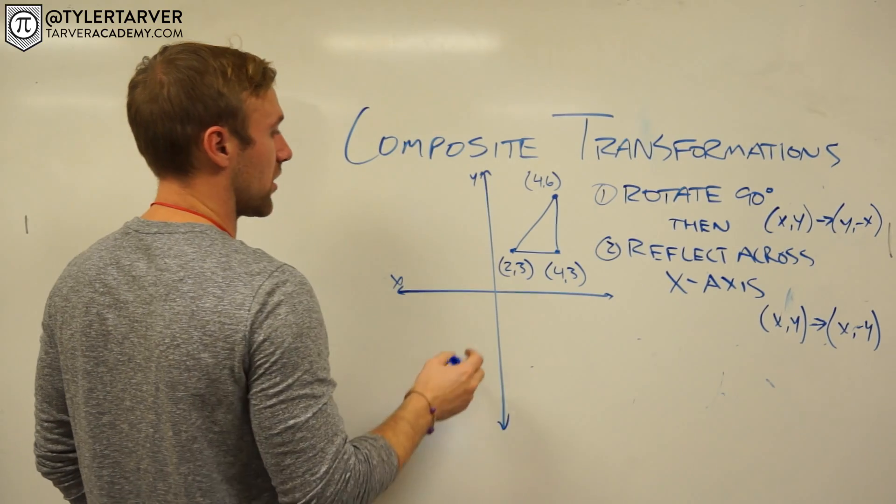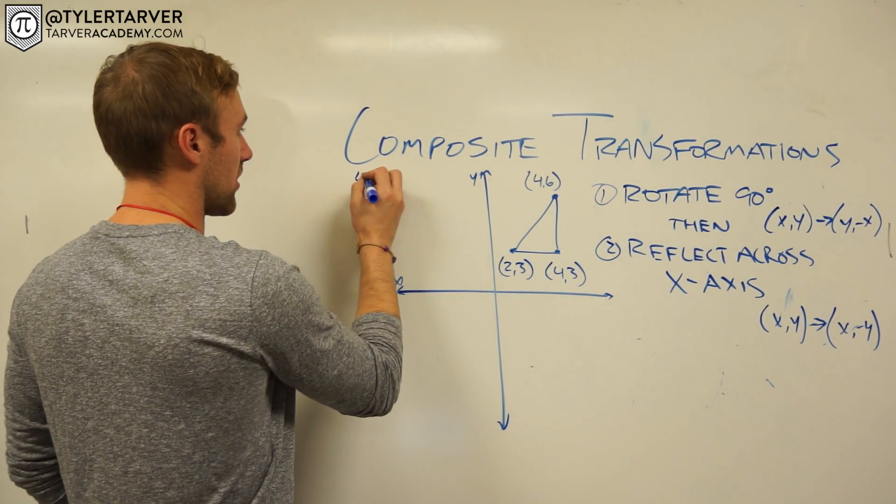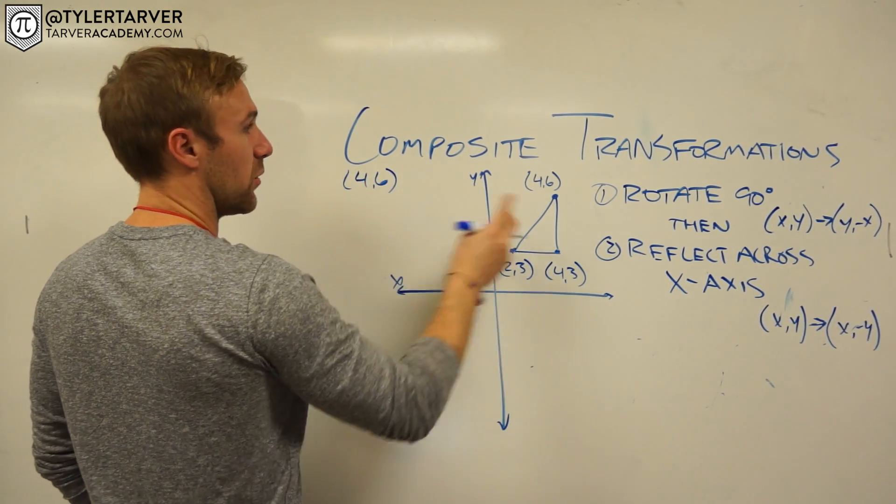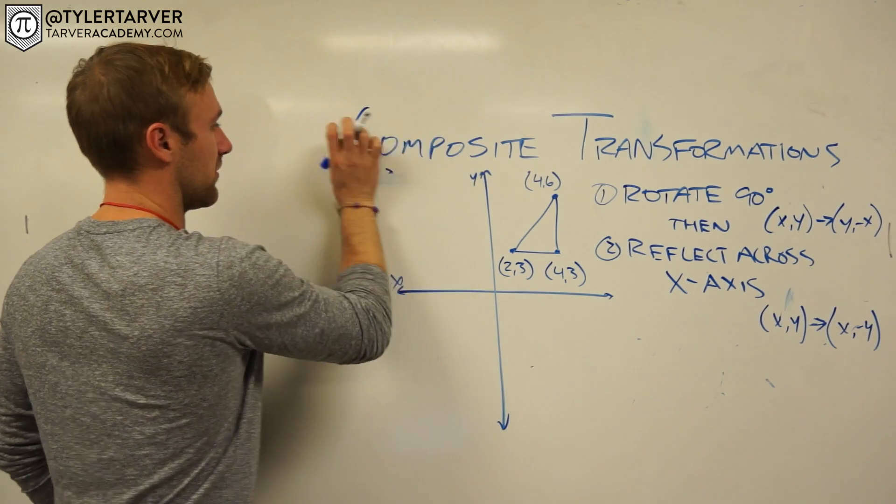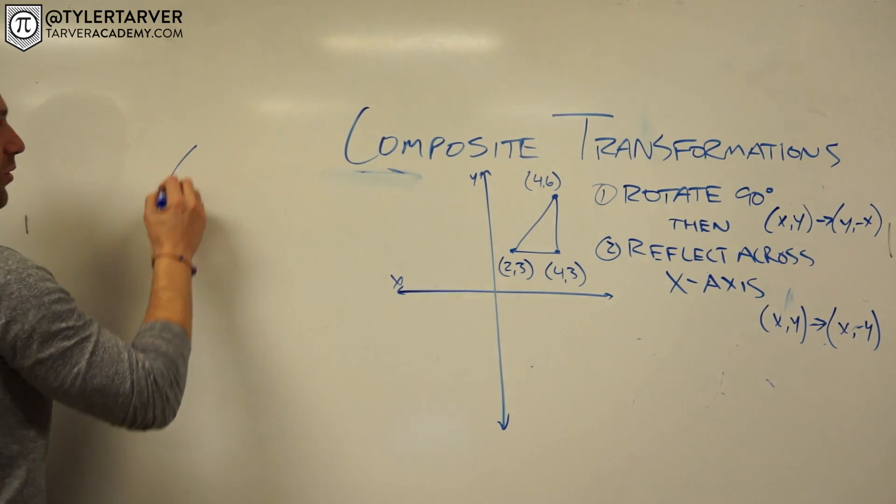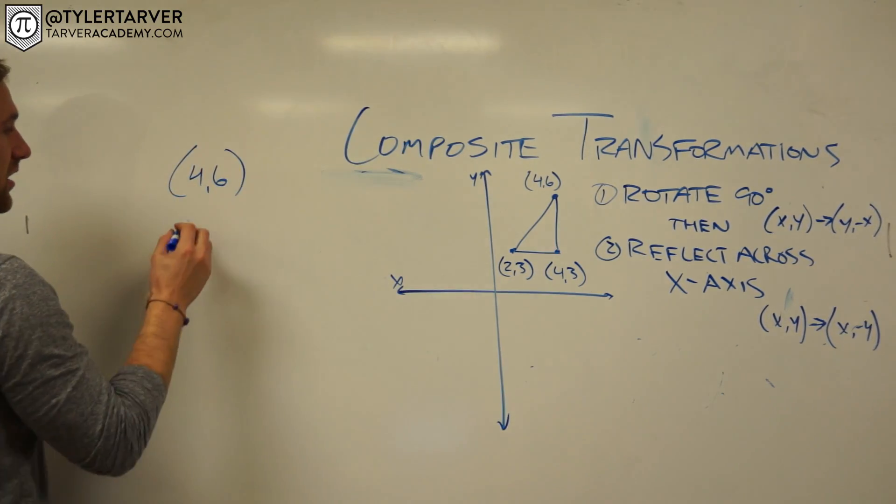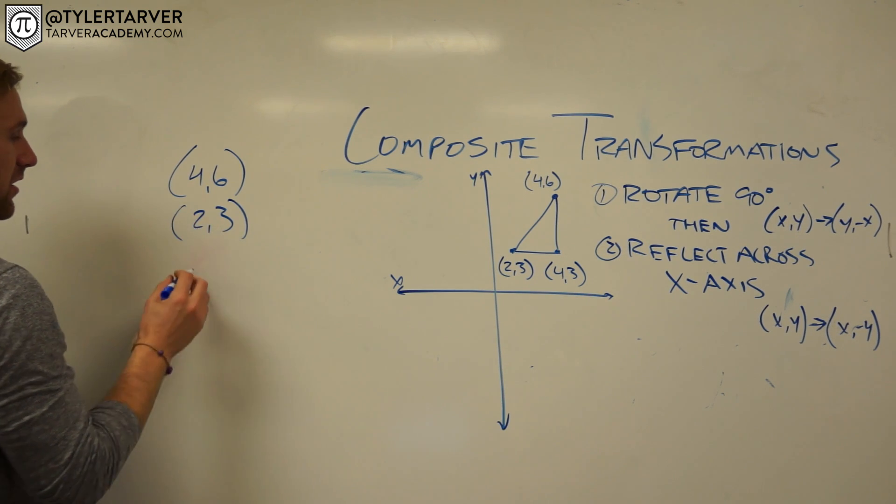Okay, so let's do it. Okay, so we want to take this one, four, six. So we got four, six. We're going to flip it. Let's do it over here. Let's take all three of our coordinates. Four, six, two, three, and then four, three. Okay.